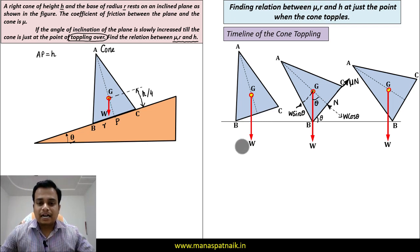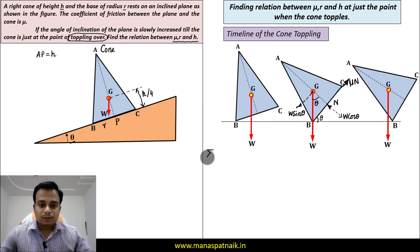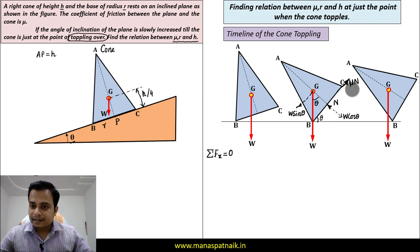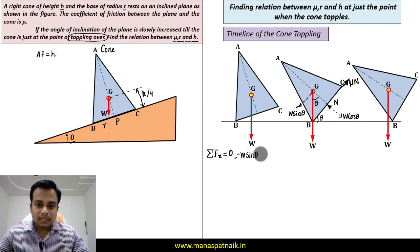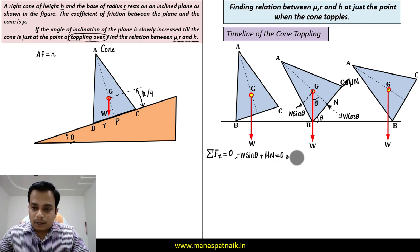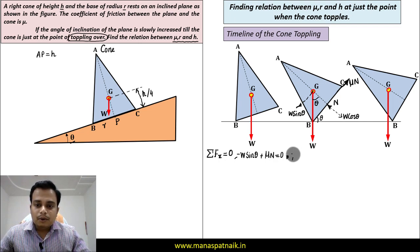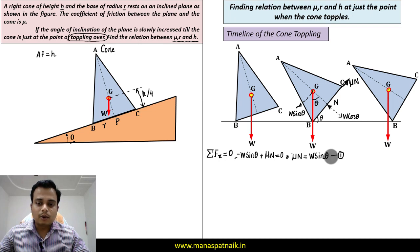What we can do is we can apply these equations of static equilibrium. We have summation of all the forces along x is equal to zero. We've got μN right side positive, W sin theta left side negative, so it's something like this: μN + W sin theta with a negative sign. This is going to be μN = 0, or you can write this as μN = W sin theta. Let's call this equation number one.